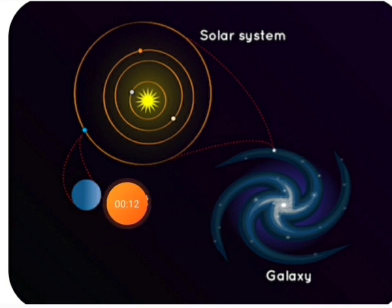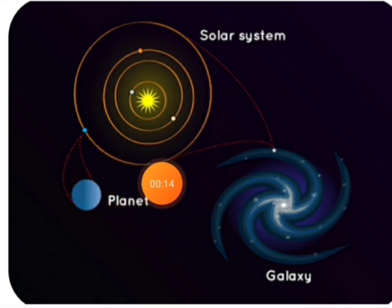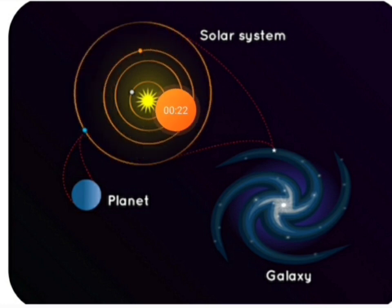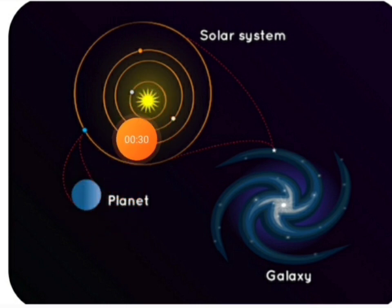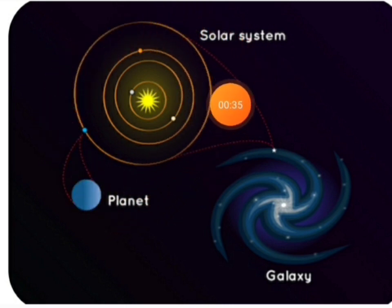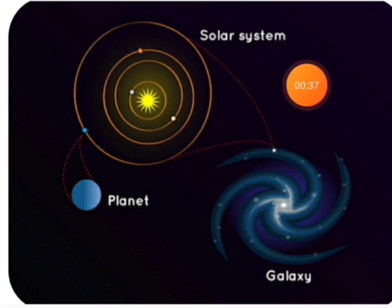We live on a planet called Earth, and that is part of the solar system where all the planets revolve around the sun. You know children, the sun is also a type of star. As it is near to our planet, it looks big. All the other stars are very far away from our planet, so they look very small.